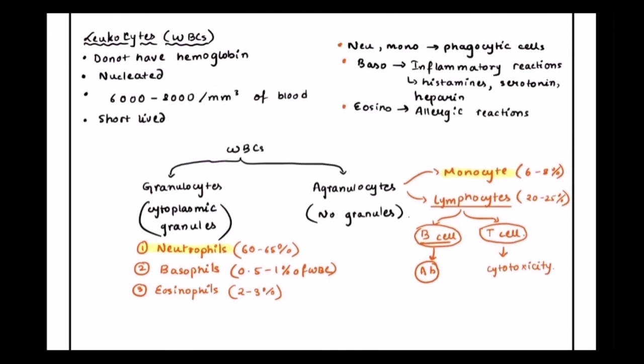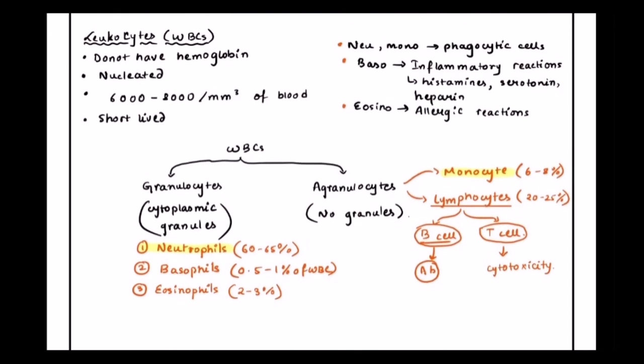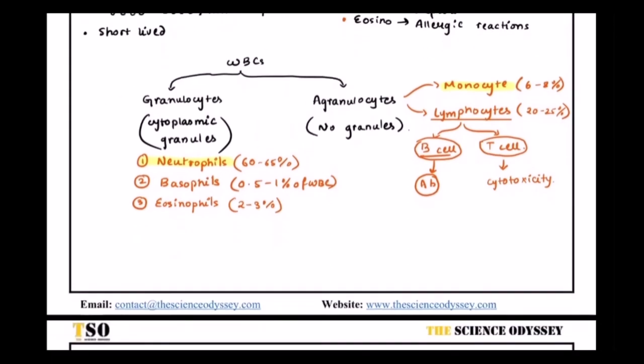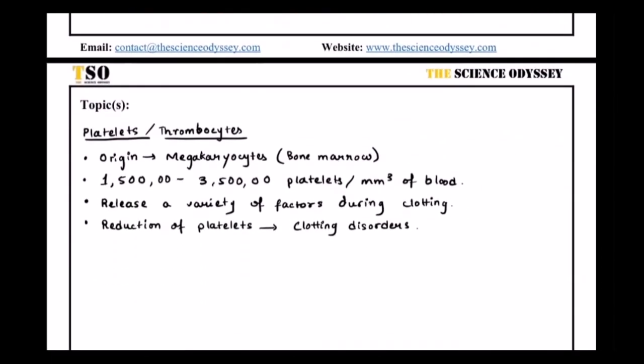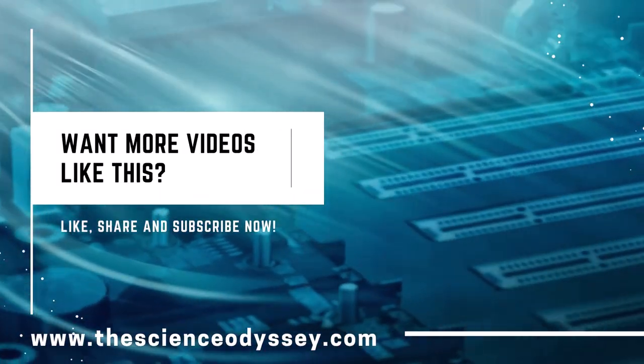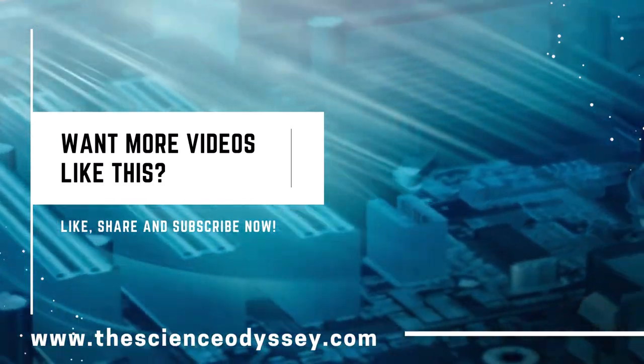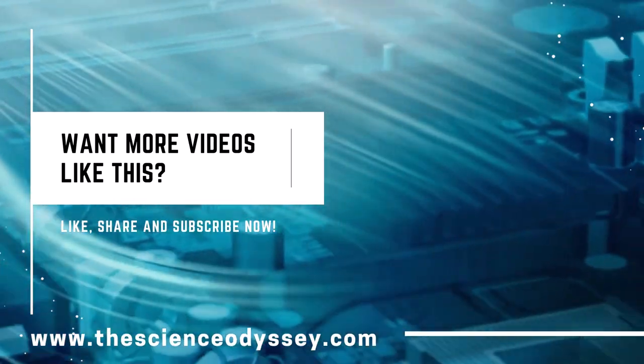So, that was about platelets and we also talked about the WBCs, the different kinds of WBCs. And further, we are going to speak about the blood grouping. And after that, we are going to talk about the blood clotting mechanism, how it takes place.